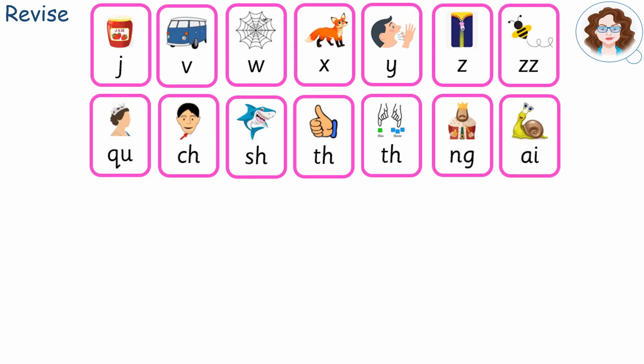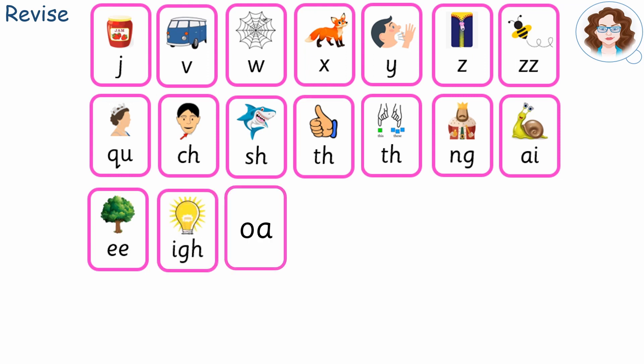Now, can you say the phoneme and do the action before the picture appears? E, tree. I, light. O, boat. O, moon.